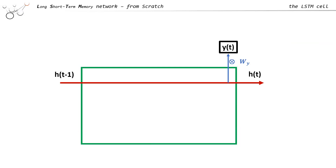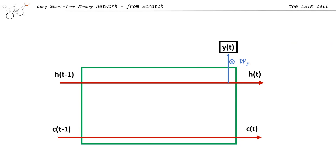Now we have a second strand, so we have to combine H and C, and somehow they have to communicate with each other. One idea was to add information from H to C and do this in a particular way.